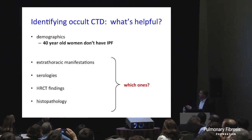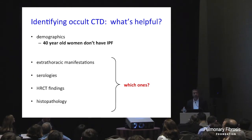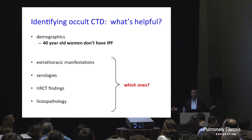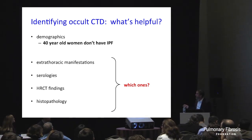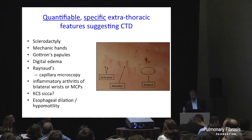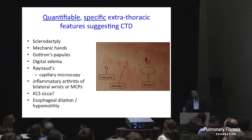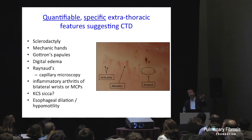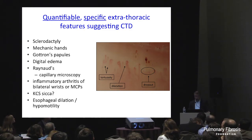How do you identify connective tissue disease? It's not realistic to say do a rheumatology fellowship, so what can we do? We can look at a few clues: demographics — a 40-year-old woman with a radiographic or biopsy pattern of UIP is not going to be idiopathic pulmonary fibrosis, that's completely the wrong demographic, highly suspicious for HP or connective tissue disease. We also look at extrathoracic findings, serologies, and the CT scan. You're primarily looking for scleroderma, myositis, and rheumatoid.